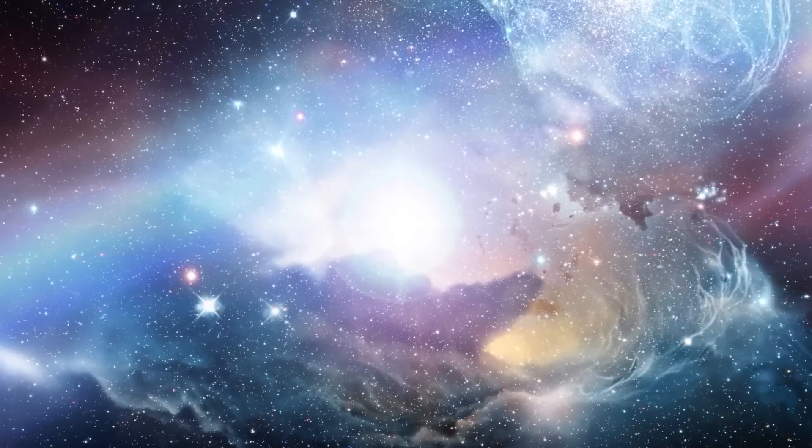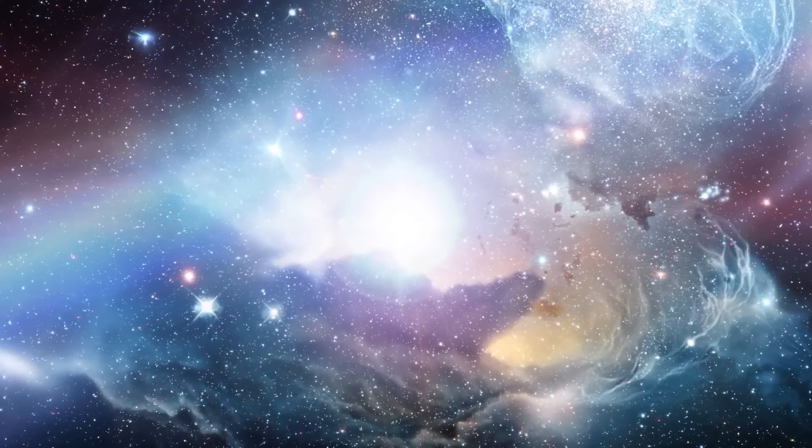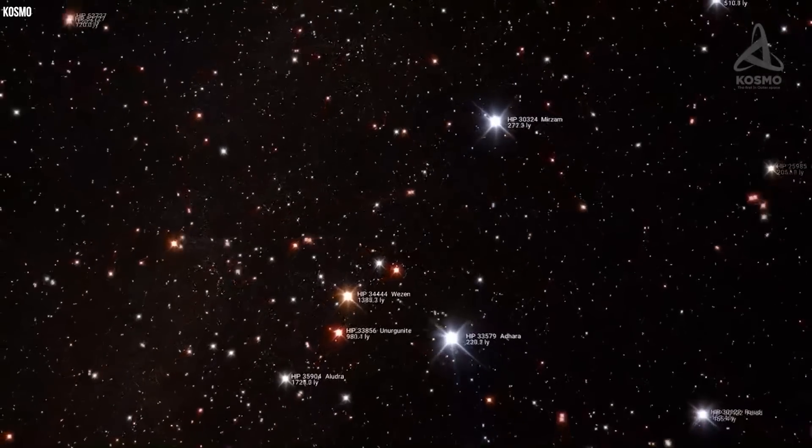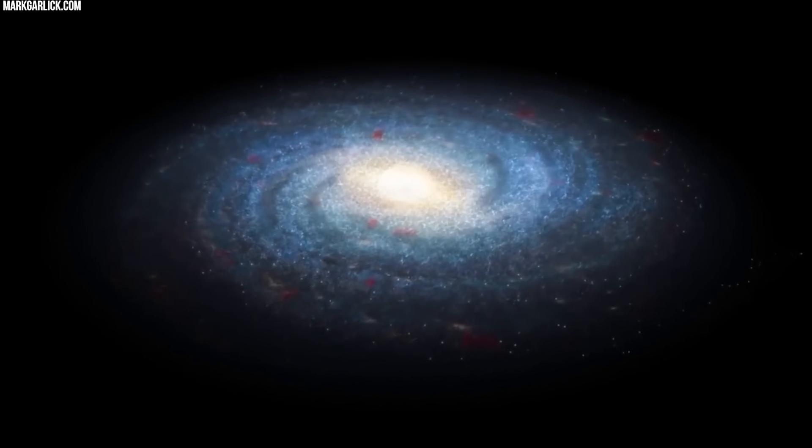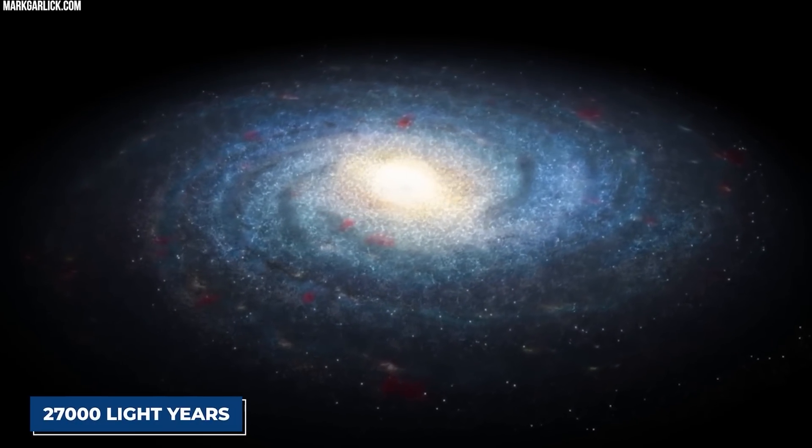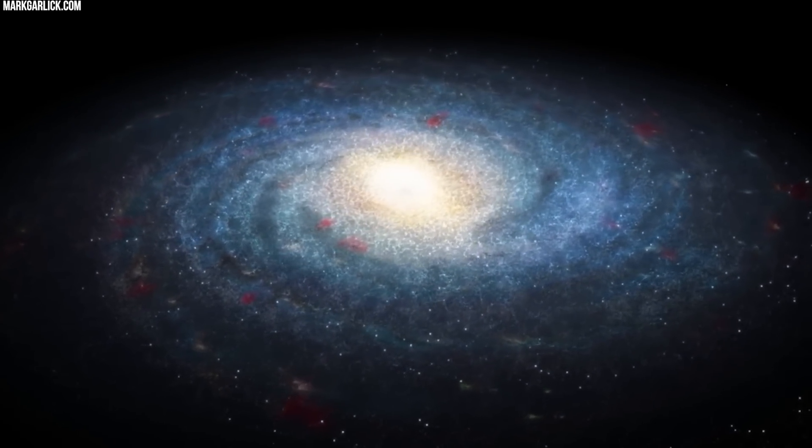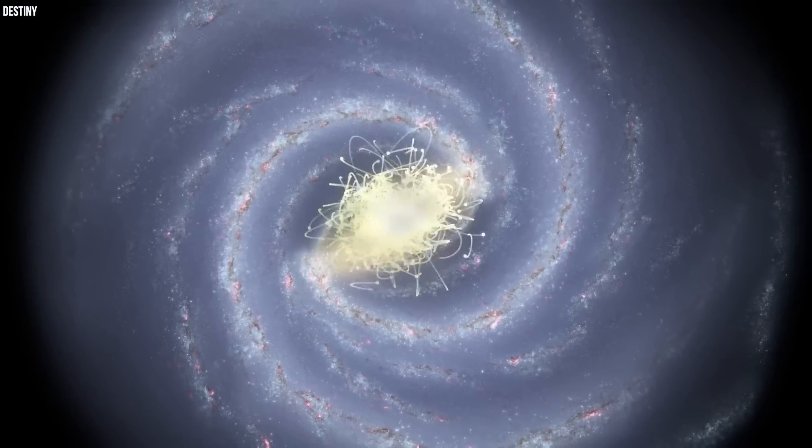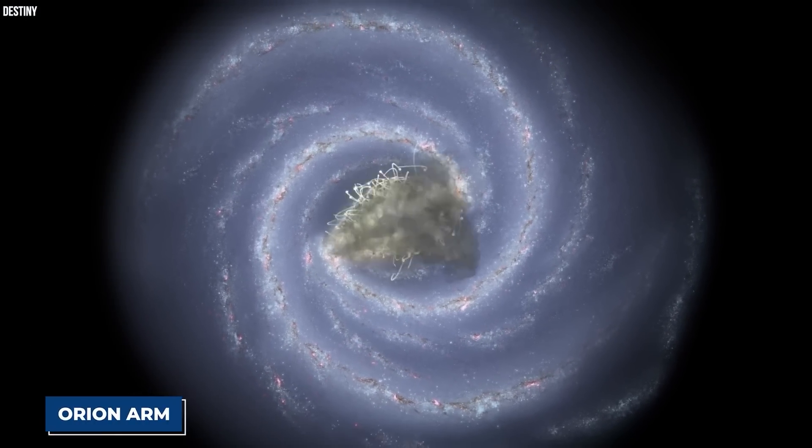There are approximately 100 to 400 billion stars in the Milky Way, and at least the same number of planets. Our solar system is located at a distance of around 27,000 light-years from the galactic center on the inner edge of a spiral-shaped concentration of gas and dust called the Orion Arm.